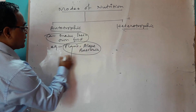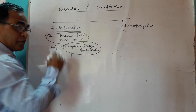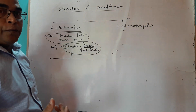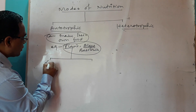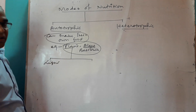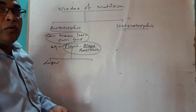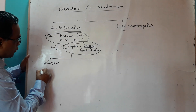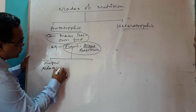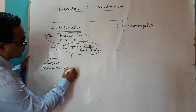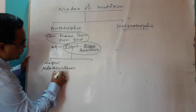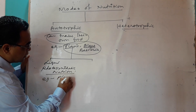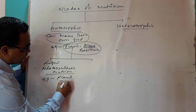These organisms can make their own food in two different ways. Like plants and algae, as they have chlorophyll they use light energy — sunlight and water — to make their own food. So this type of nutrition is called photosynthetic nutrition. Examples of photosynthetic nutrition are green plants, algae, etc.